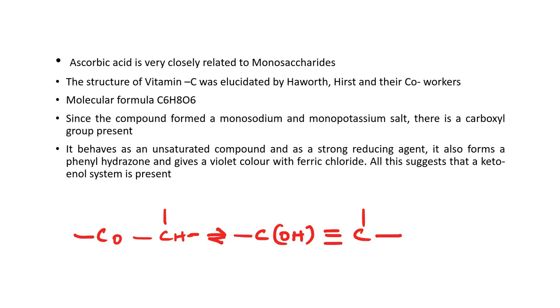It contains 6 carbon atoms, 8 hydrogen atoms and 6 oxygen atoms in its structure. Since the compound formed a monosodium and monopotassium salt, there is a carboxyl group present. It behaves as an unsaturated compound and as a strong reducing agent. It also forms a phenylhydrazone and gives a violet color with ferric chloride. All these reactions suggest that a keto-enol system is present in the structure of ascorbic acid.